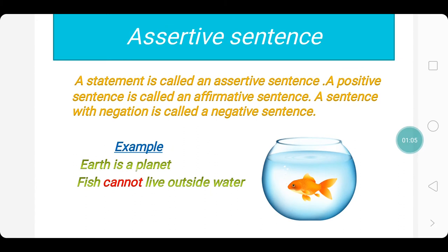Assertive sentence. A statement is called an assertive sentence, also called a declarative sentence. In an assertive sentence, there are no emotions or feelings conveyed — it is just a statement. A positive sentence is called an affirmative sentence. A sentence with negation is called a negative sentence. Negation is the usage of the words no or not.